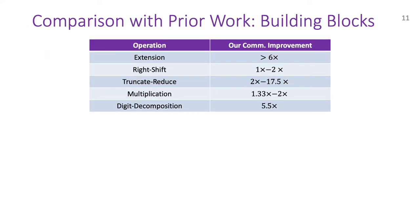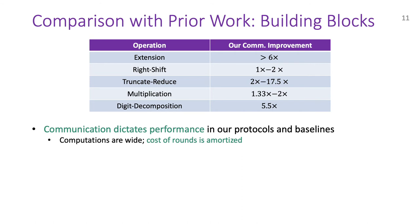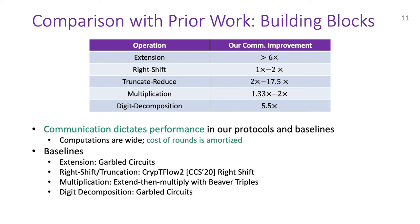Here is the comparison between the communication of our 2PC building blocks with the best baselines possible through existing techniques. By communication, I mean the total amount of data transferred between the parties during the secure computation. We focus on communication improvements here because for our protocols as well as these baselines, communication dictates the performance. Moreover, the computations we are dealing with are wide enough that rounds of communication are easily amortized. For extension and digit decomposition, garbled circuits is the baseline and we are around six times better in both cases. For right-shift and truncate reduce, the baseline is the right-shift protocol from Cryptflow2. For computing right-shifts, we are better than this baseline by up to two times and our improvements are much larger for truncate reduce, which we use more frequently throughout SIREN. Finally, we have multiplication, the baseline for which is to first extend the operands to the output bitwidth and then multiply them via the standard approach of using Beaver triples. We have a new protocol for multiplication, which is up to two times better than this baseline.